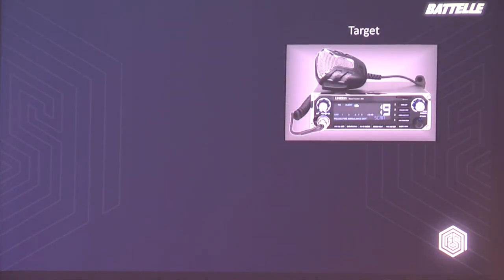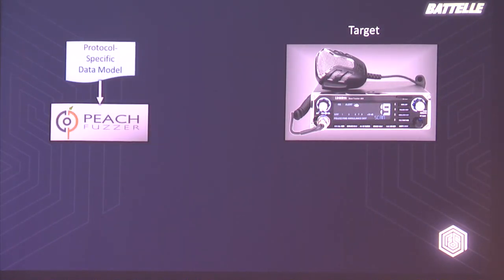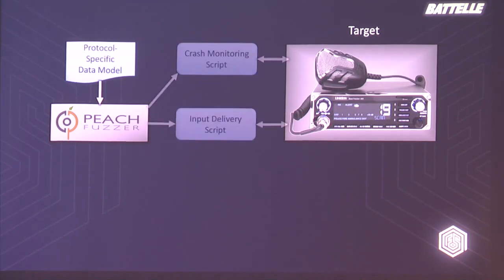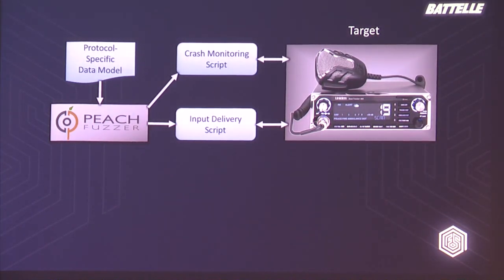That method looks something like this: you take the target, do a bunch of reverse engineering, tear it apart, look at the code, figure out what protocols it talks, and determine which protocol you want to fuzz. Then you spend time creating a protocol-specific data model, which we used to feed into the Peach fuzzing framework. We love Peach, but it's a little cumbersome to use. Then you create custom crash monitoring scripts to determine if the device has crashed, and another script to handle input. Once you've done all that, you're actually ready to start fuzzing.